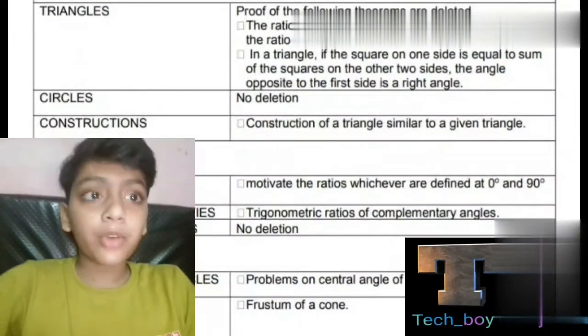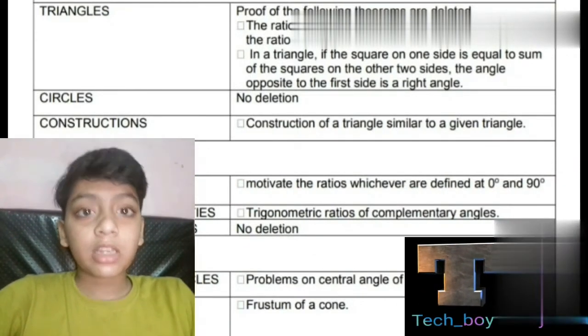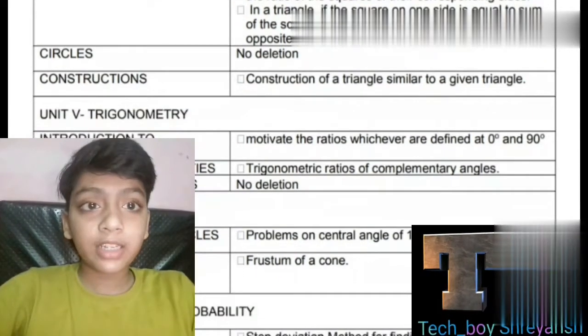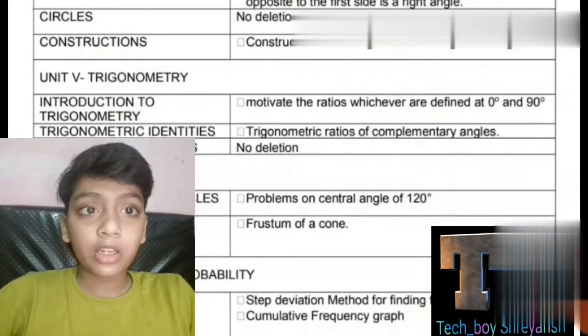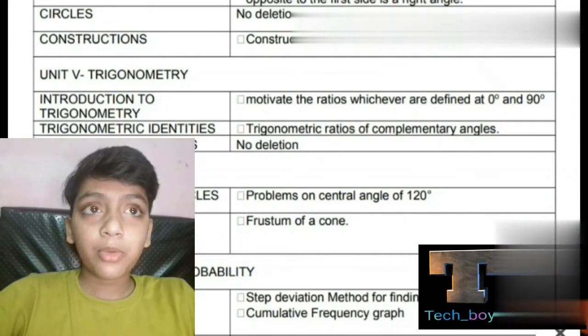In triangles, proof of the following theorems are deleted. You can see the theorems on the screen, so I'm not telling them - you can write them in your copy. Moving towards circles, there are no deletions.